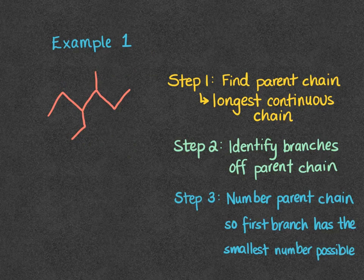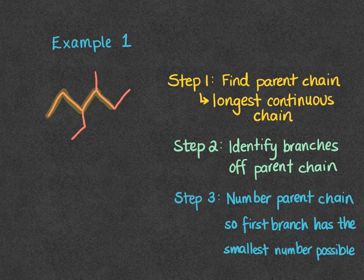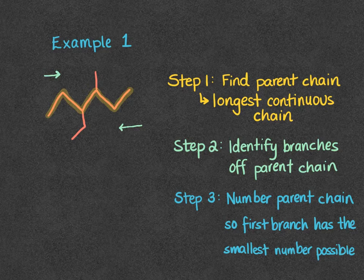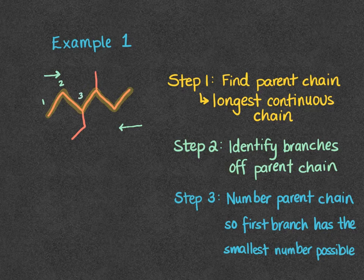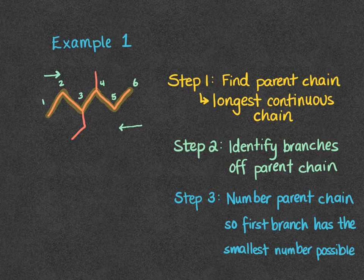Our next step is to number the parent chain so that the first branch has the smallest number possible. We're going to number our parent chain either from left to right or from right to left. I'm going to highlight the parent chain again in yellow. If I start on the left side and put the numbers on top of the chain, I count one through six, and from left to right my branches are going to be at carbons three and four.